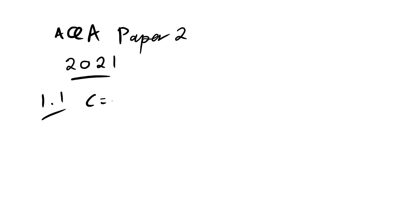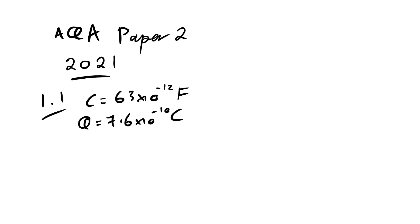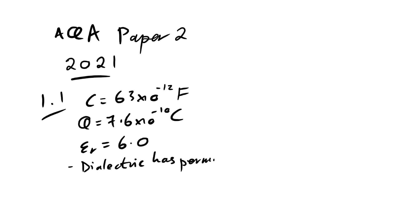Question 1: we have a capacitor with a capacitance of 63 picofarads — let's write that as 63 × 10⁻¹² farads. We're told the charge stored is 7.6 × 10⁻¹⁰ coulombs, and we have a relative permittivity of 6. What is meant by a dielectric constant of 6? We can say the dielectric has a permittivity 6 times that of free space.